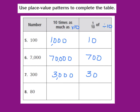Now I want you to try question number 8 on your own. The number given is 80. I want you to find a number that's 10 times as much as 80, and also a number that's one-tenth of 80. Pause the video and come up with your answer. If you got 800 is 10 times as much as 80, you are correct. And if you got 8 is one-tenth of 80, you are correct. Good job.